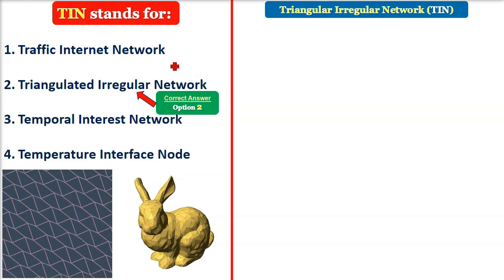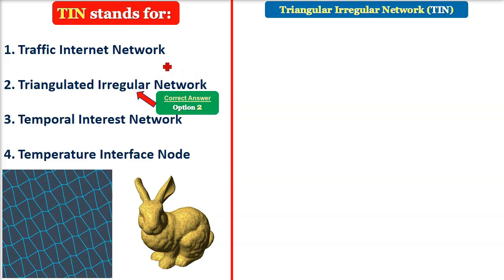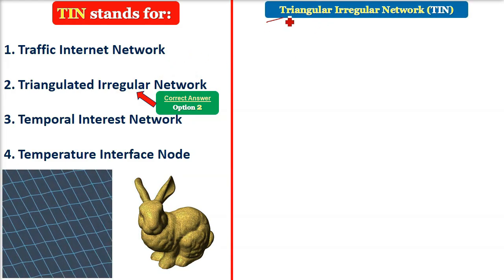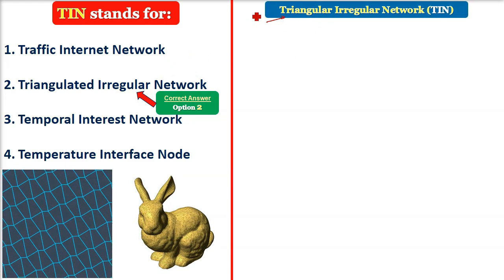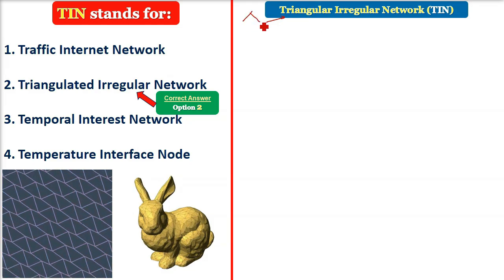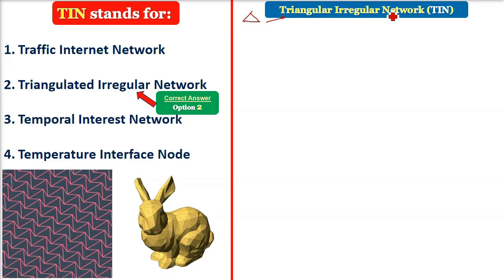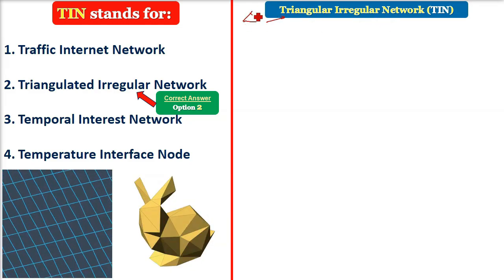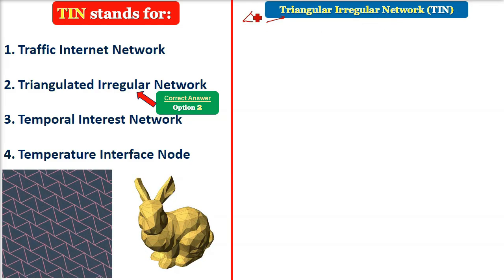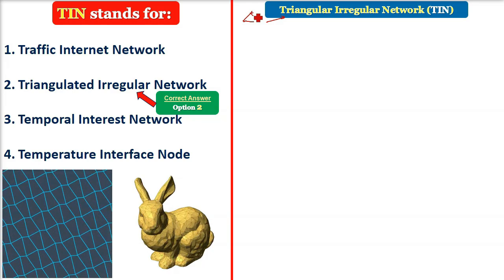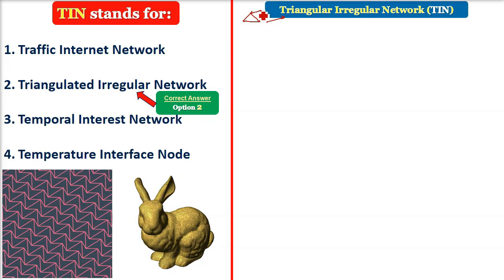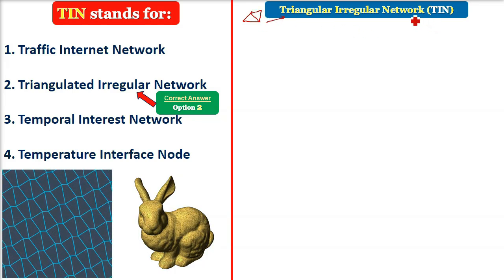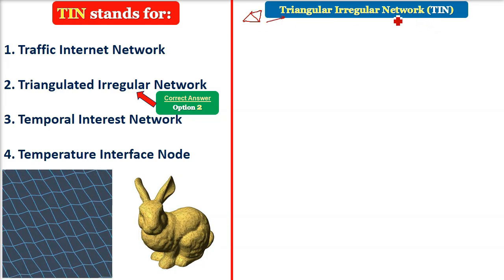TIN, or triangulated irregular network — first of all, we are talking about triangles, so there will be a triangle mesh. Irregular means you will have different shapes and sizes of triangles, and they are a network because they are all connected together.